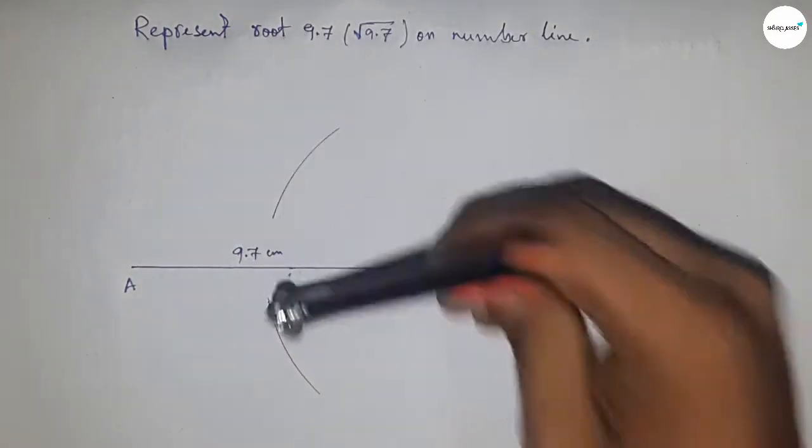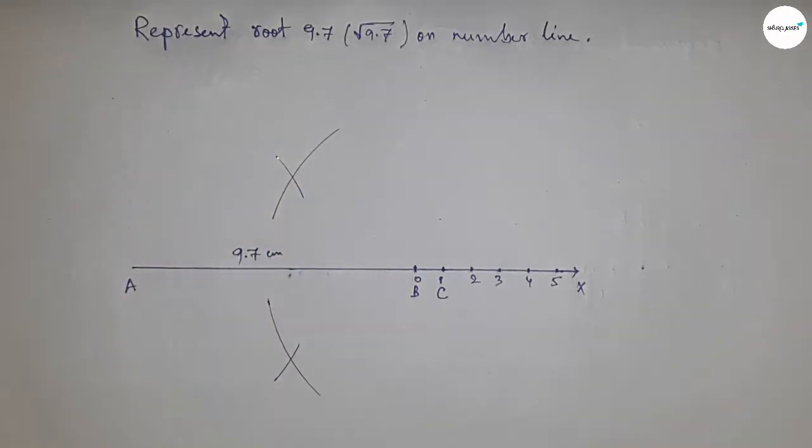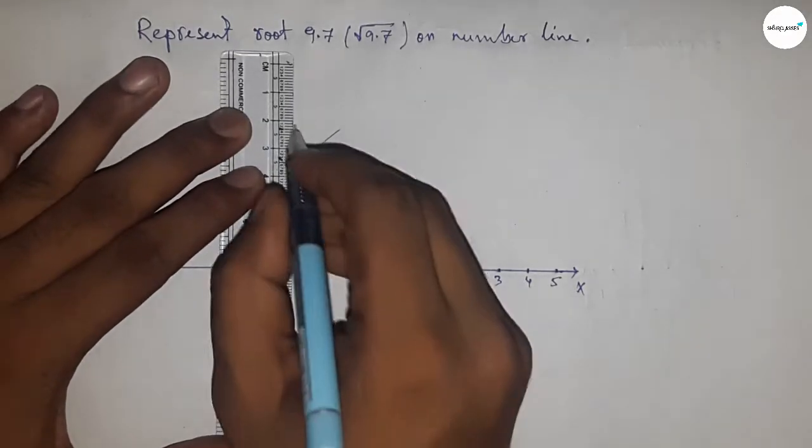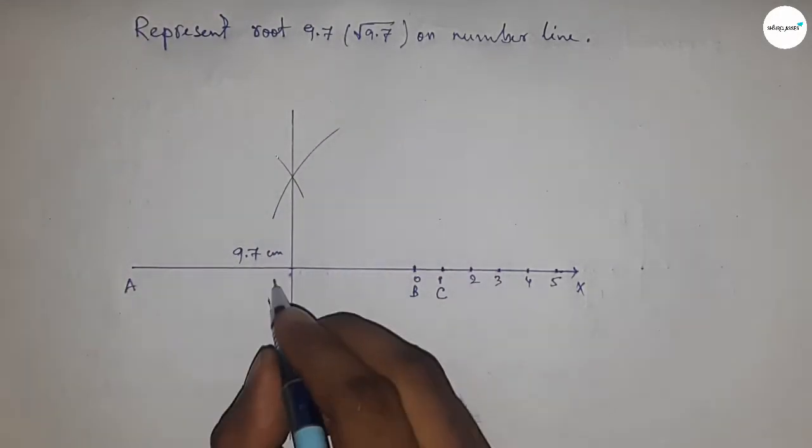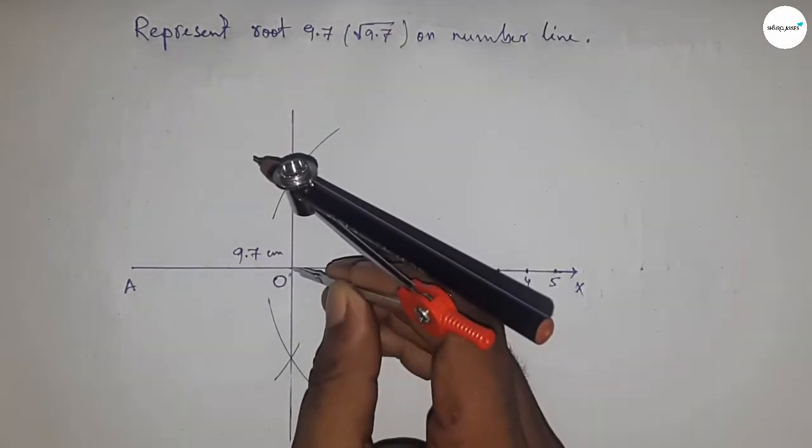Next, bisect line AC. Take greater than half of AC and draw arcs with the same length from both ends. The arcs intersect to give point O. Now take the distance OA or OC and draw a semicircle.